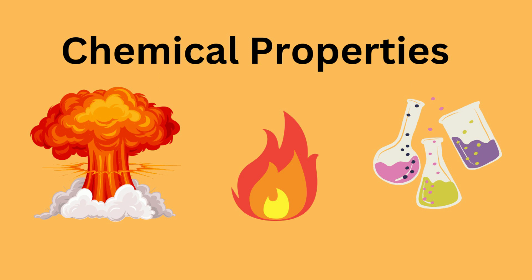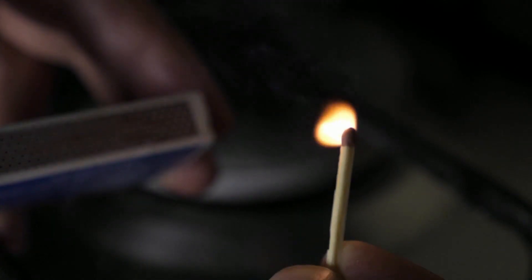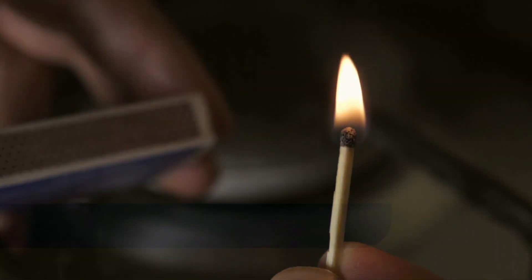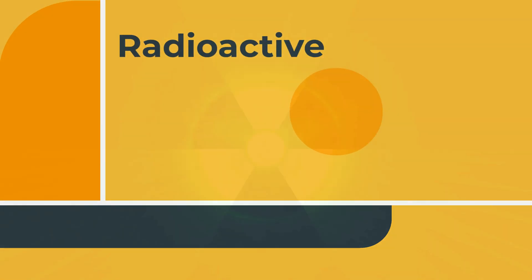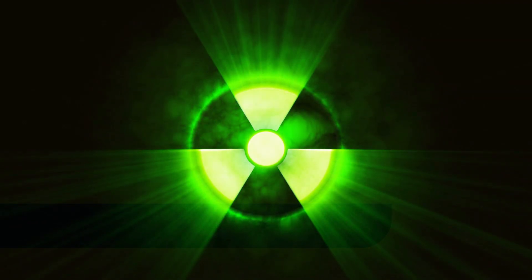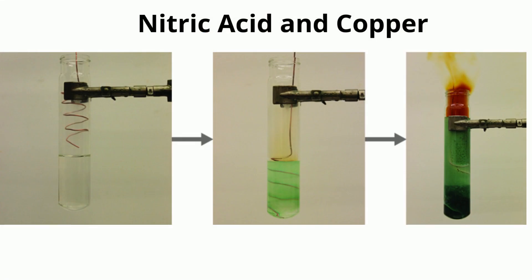This is not a list of every single chemical property, but an example of some. Flammable — how easily will the substance react when exposed to an open flame? Radioactive — this is how the nucleus of the atom is going to change. Oxidizer — this is a substance that promotes combustion in other materials. An example is when you mix nitric acid with copper; it creates a cool brown gas.